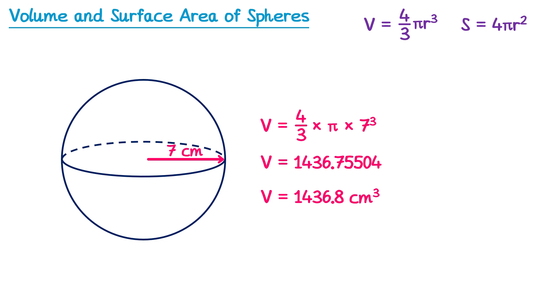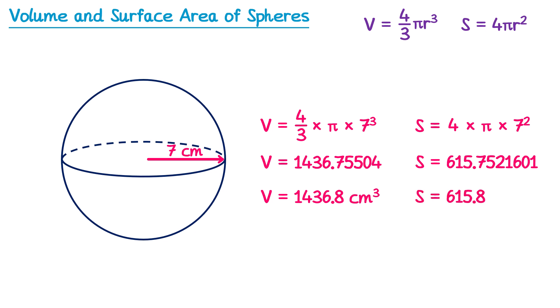For the surface area, we'll use the second formula: 4 multiplied by π, multiplied by r squared. Since r is 7, we multiply by 7 squared. Type this into your calculator, and rounding to one decimal place gives 615.8. The units of surface area are something squared, so it will be centimeters squared.